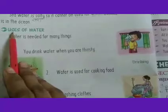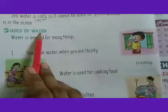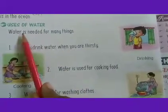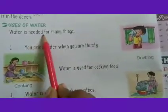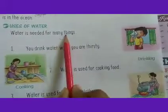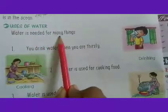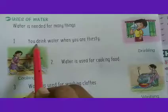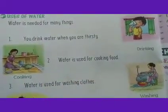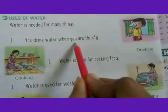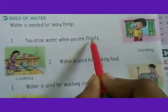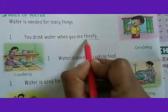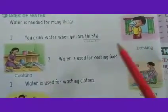Now our next topic is: Uses of Water. Water is needed for many things — पानी का उपयोग हम अलग-अलग तरह से, अलग-अलग चीजों के लिए करते हैं। First — You drink water when you are thirsty. अब पानी का उपयोग पीने के लिए करते हैं जब आप प्यासे रहते हैं — Thirsty means प्यासे रहते — तब आप पानी पीते हैं।